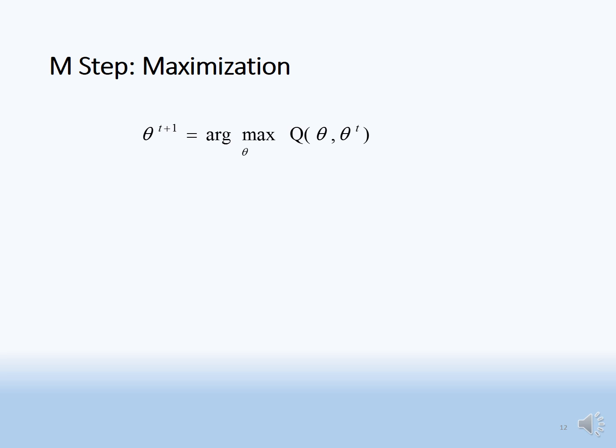M-step: here we update the model parameter by computing argmax over theta of Q(theta, theta_t). That is, we find the value of parameter theta that maximizes Q(theta, theta_t) and set it as the new theta_t.